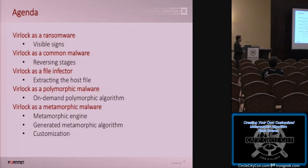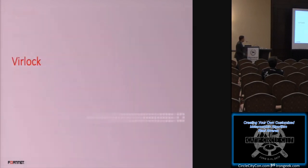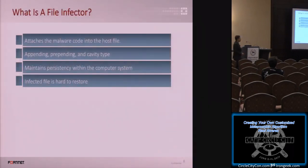We're going to talk about BirLock, which is a file-infecting ransomware. Some of the features we'll cover: the reversing stages, and then we'll try to make our own customized version of its metamorphic engine. BirLock is a file infector — it attaches the malware code to a host file. For example, it wants to infect calculator, and it will be infected.